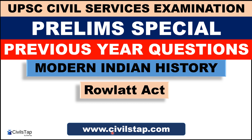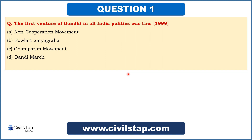If you want to do these questions in quiz format, go to www.civilstep.com. Now let's start with the first question. This question came in the prelims of 1999: 'The first venture of Gandhi in all-India politics levels.' The options are: non-cooperation movement, Rowlett Satyagraha, Champaran movement, and Dandi March.